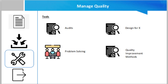Problem solving is another tool. Quality assurance and quality improvement require problem solving, where you find the cause of the defect, generate possible solutions, choose one of those solutions, and then implement it. Quality improvements can be based on recommendations from the quality control process or uncovered during the Manage Quality process. Methods such as Six Sigma can be used to implement quality improvements.